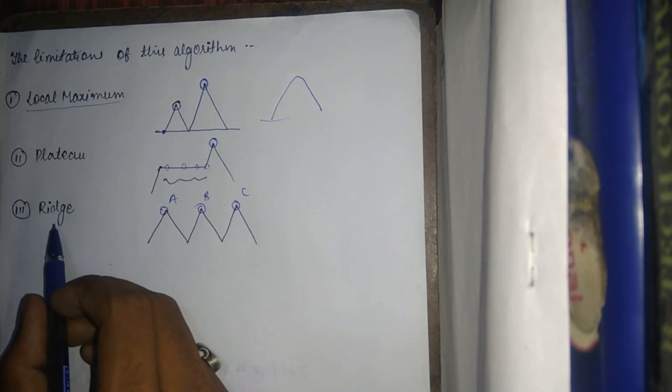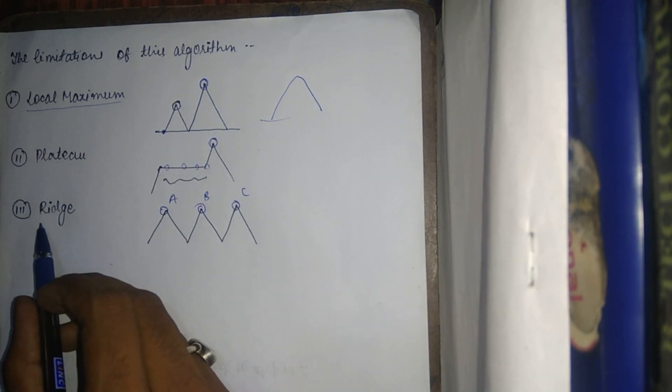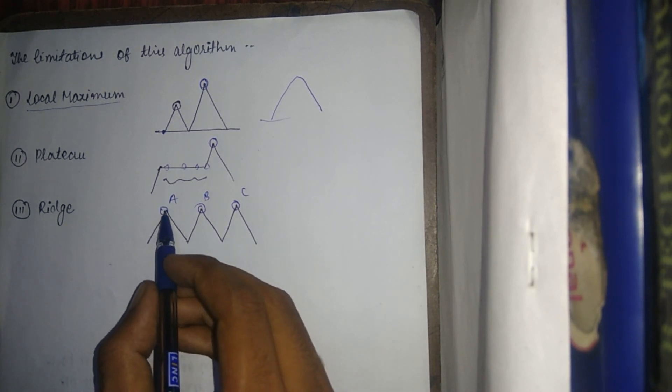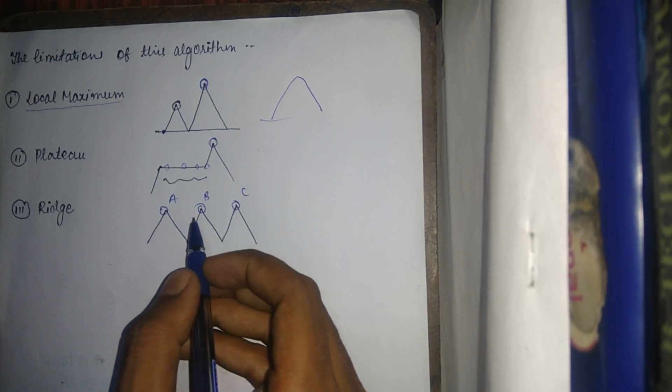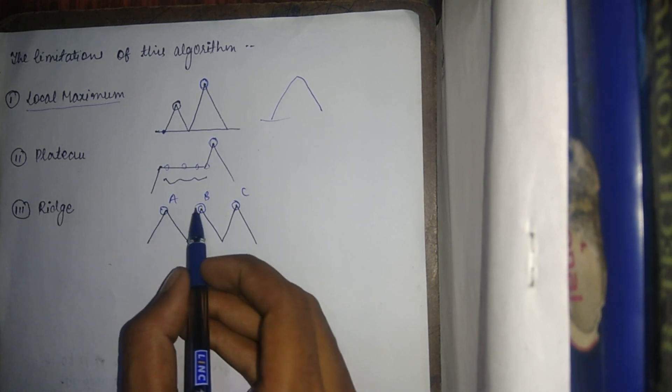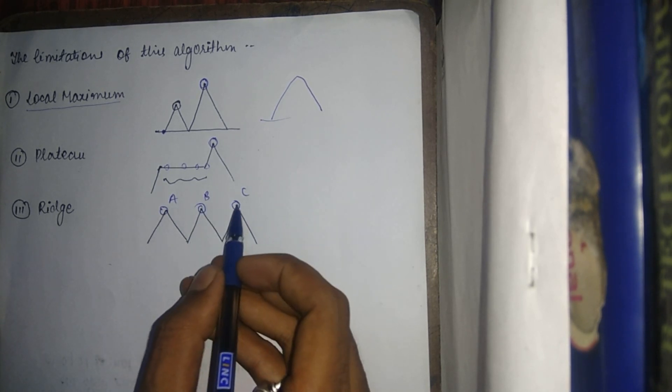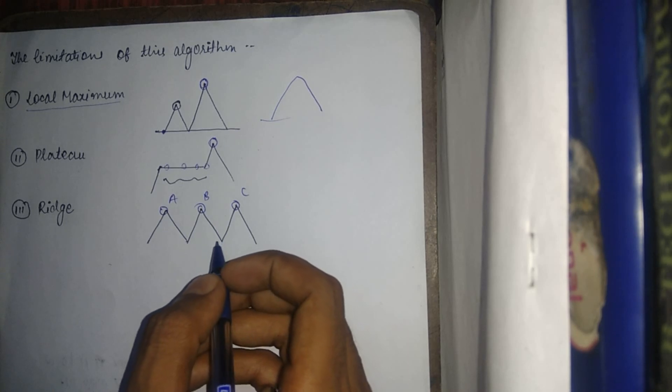The third and last limitation is ridge. As we can see from the diagram, there are multiple points at the same height, so the algorithm cannot give us a specific answer for which is the local maximum. If we get a maximum, it could be from multiple points, and the algorithm cannot proceed to distinguish between them.